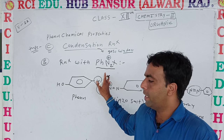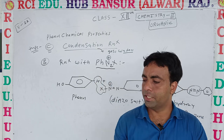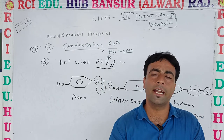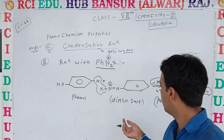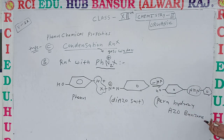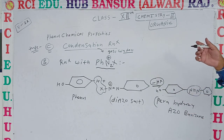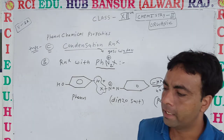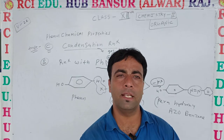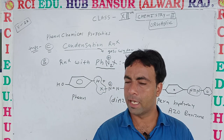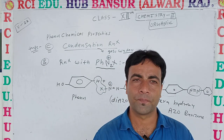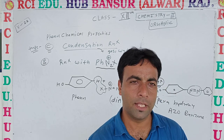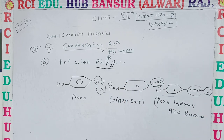So you have seen in this video: formation of bisphenol A via condensation with acetone, and also the formation of parahydroxyazobenzene by reaction of phenol with diazonium salt. In the next part, we will see the other remaining reactions. Thank you.